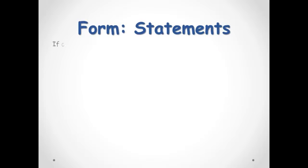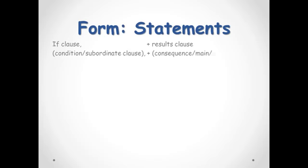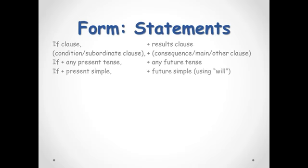The first conditional has two clauses, if clause and result clause. We can also call the if clause condition, subordinate clause, and the result clause is a consequence, main, or other clause. So, the form is if, plus any present tense, plus any future tense. However, in this video, we'll only look at the present simple and future simple using will, because these two tenses are the most commonly used tenses in the first conditional sentences.